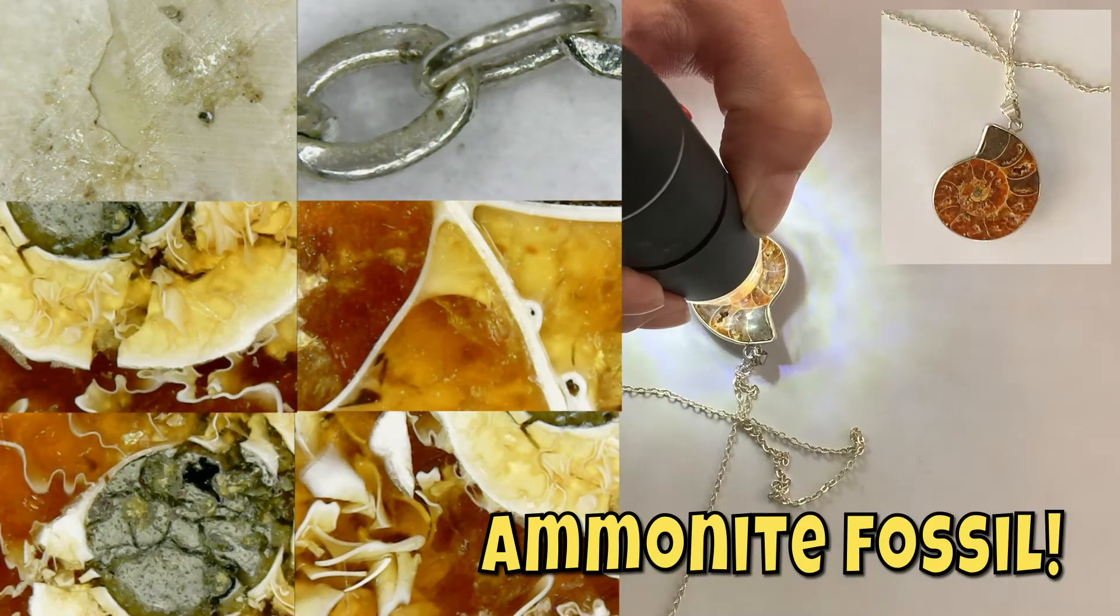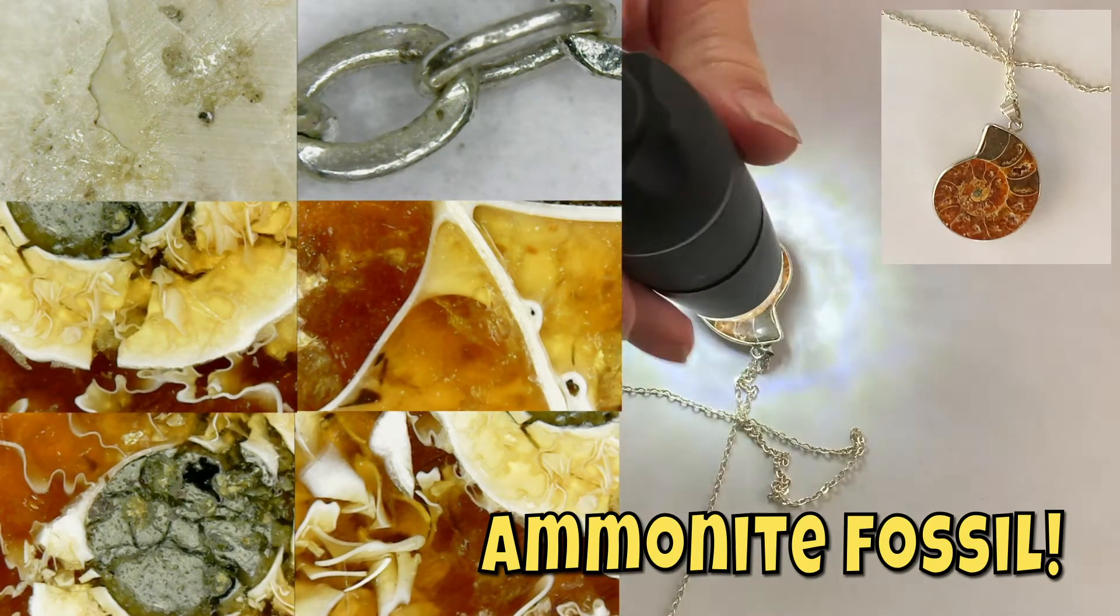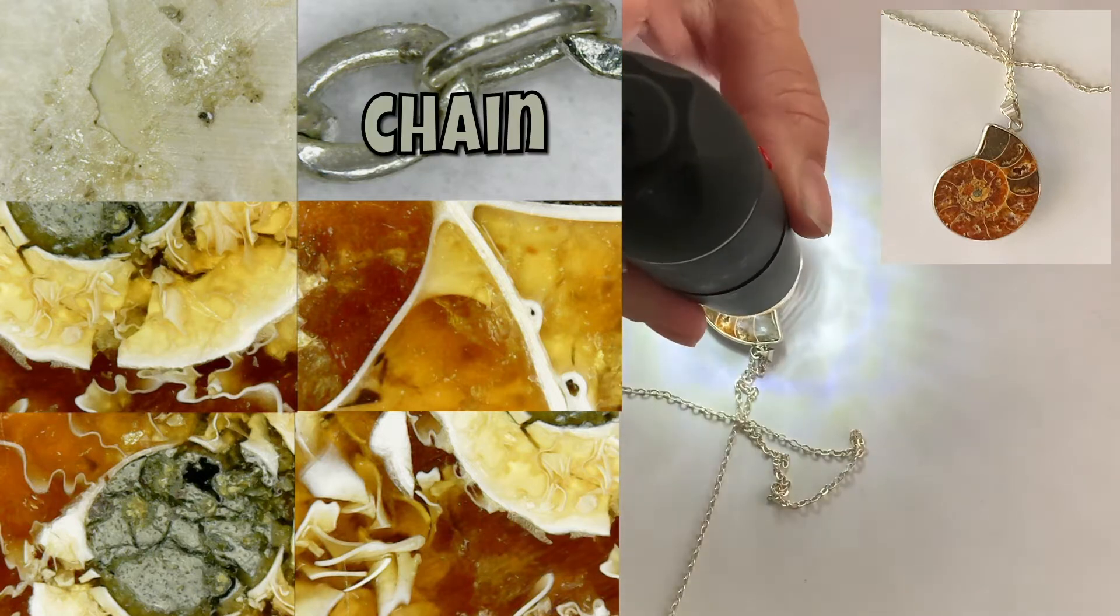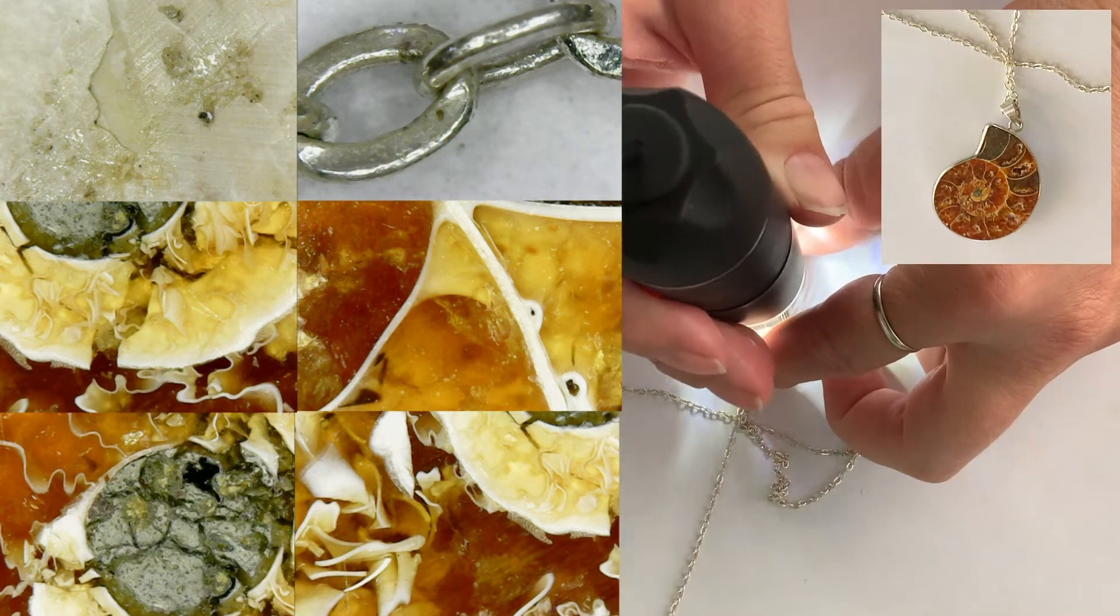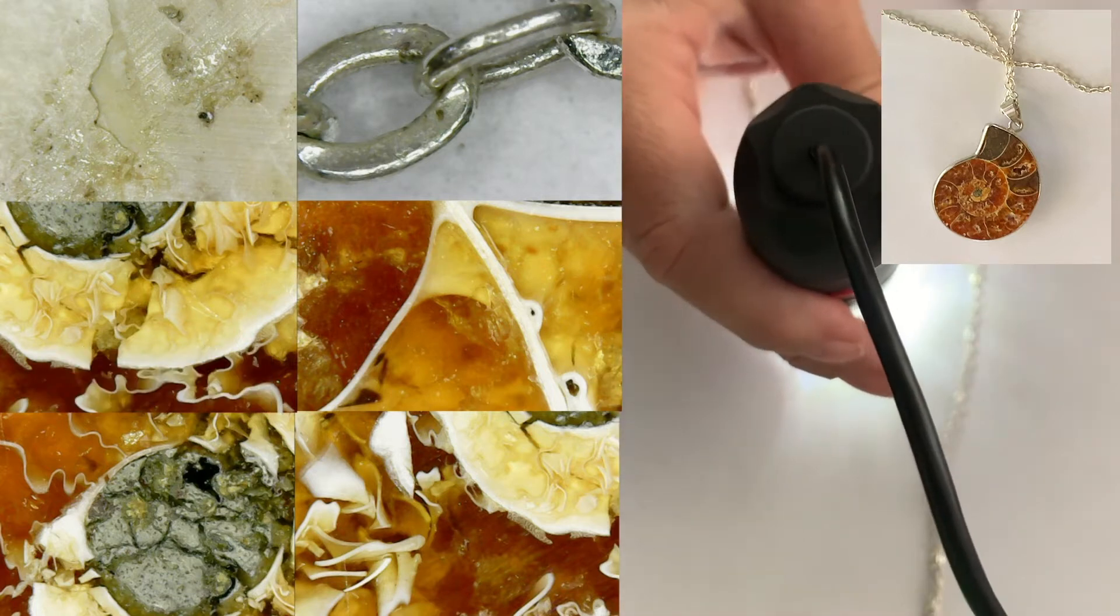It's Ty's ammonite fossil necklace. Oh! We've got the chain up on top, and the back of it on the top left. Those are all the bits. That's like the middle. Yep, that's the middle.